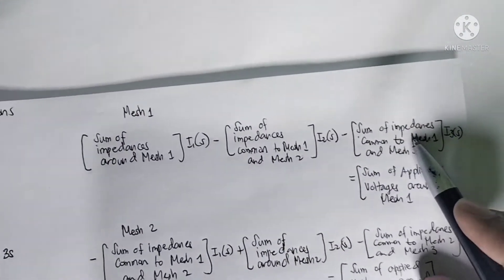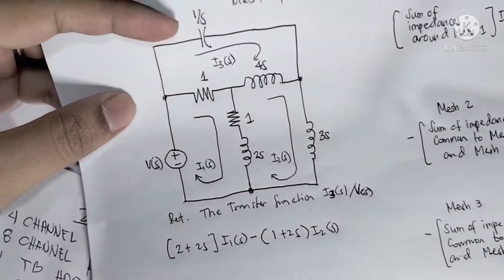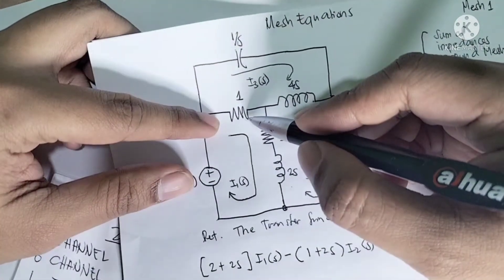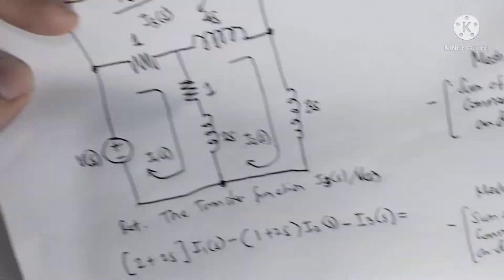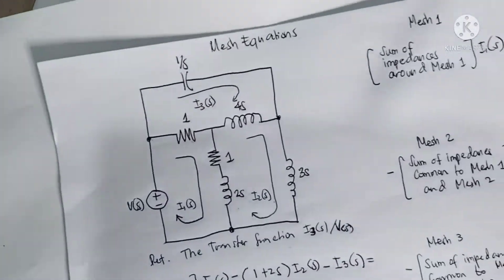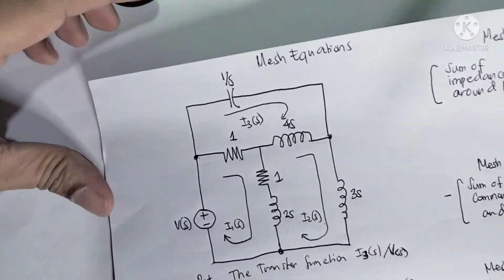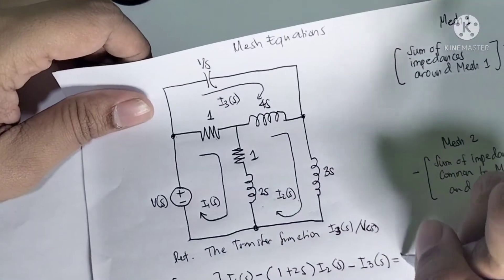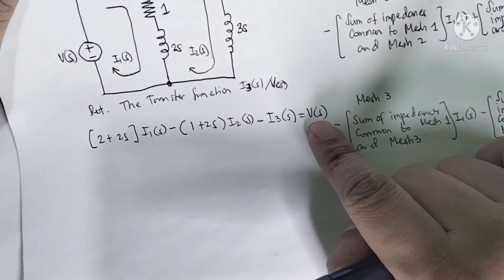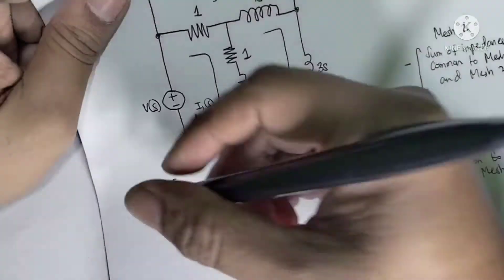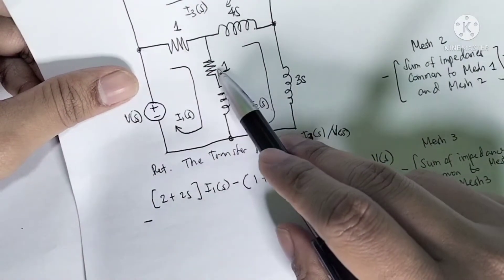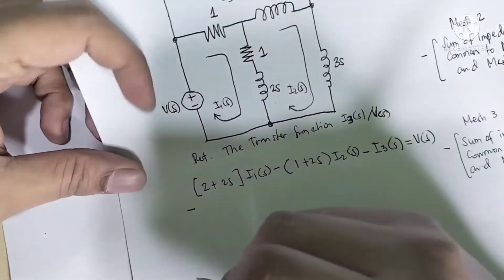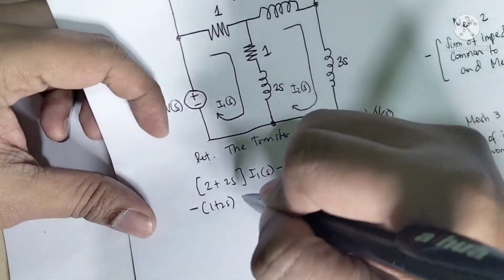The third term is the sum of impedances common to mesh one and mesh three — only the resistor is common — so this gives minus one times I3(s). The sum of applied voltages around mesh one equals V(s), the input voltage. For mesh two, the first term is minus the impedances common to mesh one and mesh two — the resistor and inductor — giving minus (1 + 2s) times I1(s).